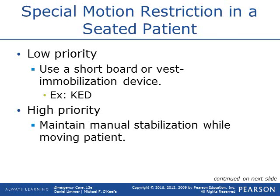We've talked about backboarding a person on the ground with a log roll. For a patient in a seated position — such as in a car — for low-priority patients, use a short board or vest-type mobilization device such as a KED. Applying the KED before moving them prevents bending and prying on the spine while getting them out of the car, then you put them on the long board.